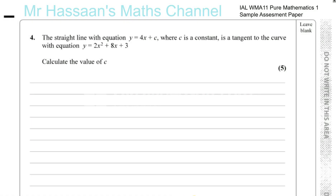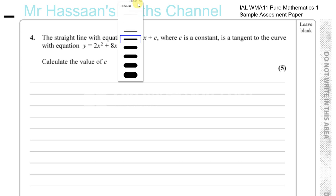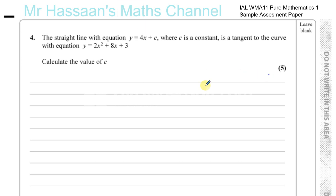Question number four from the sample assessment paper from the International A-Level P1. The question asks about a straight line with equation y equals 4x plus c, where c is an unknown constant, which is a tangent to the curve with equation y equals 2x squared plus 8x plus 3. We need to calculate the value of c.